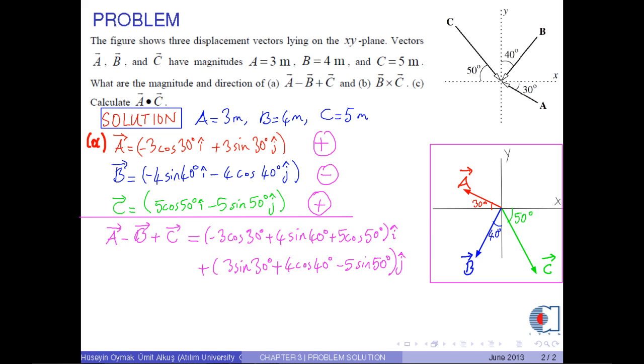And the result is approximately 3.19 i hat plus 0.734 j hat meters.